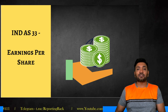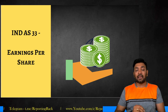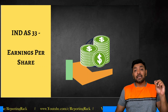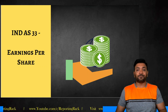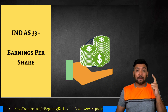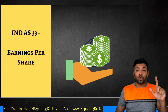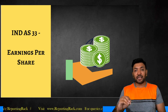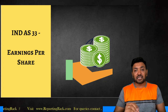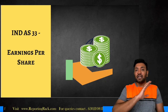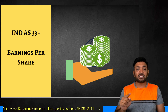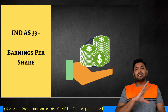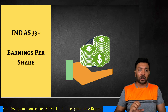Ind AS 33 divides EPS into two parts that must be presented and disclosed. The first is called Basic EPS and the second is called Diluted EPS. These are the two EPS figures which should be presented and disclosed as part of financial statements. The first part of our lecture covers Basic EPS; the next part covers Diluted EPS.